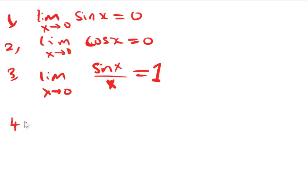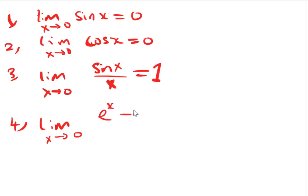Then the fourth one: if you have the limit as x approaches 0 of e^x minus 1 divided by x, this is equal to 1.